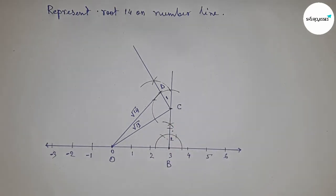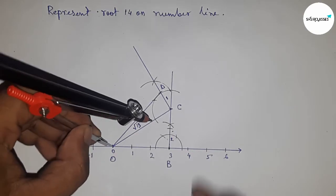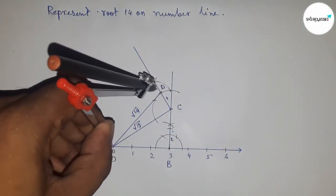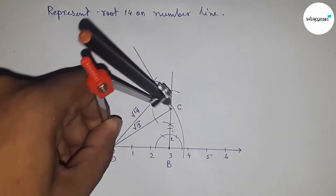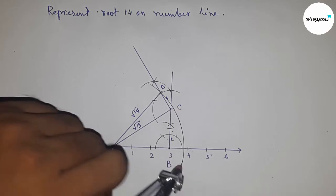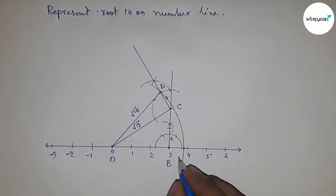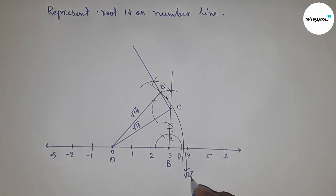By the right angle triangle, this is √14. Now take the distance OD with the compass and draw an arc which meets the number line at a point. This is point P, and this is the representation of √14 on the number line.